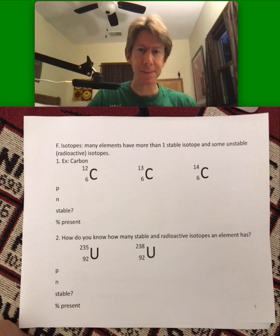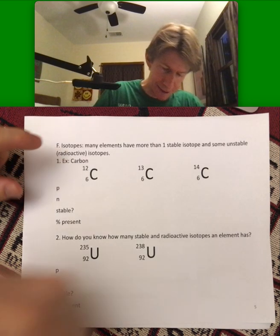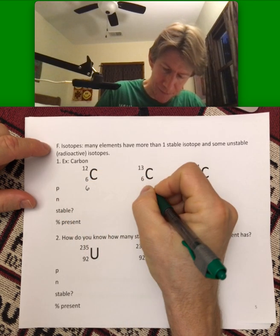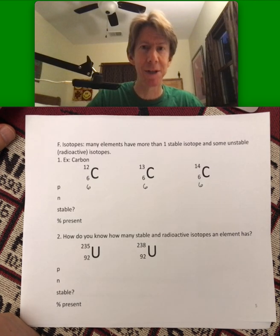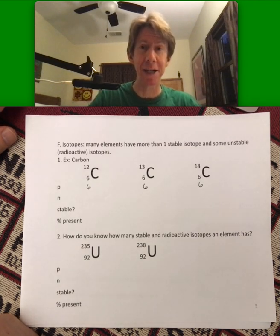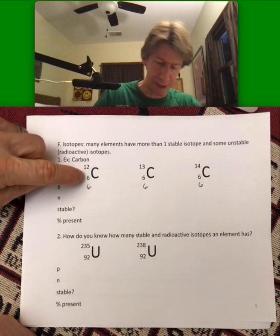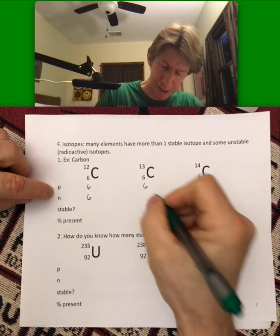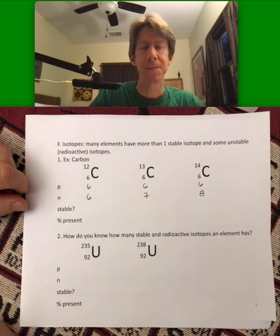So they're all carbon. So they all have six protons. Any carbon atom in the universe is defined by the fact that it has six protons. Now here, if we look at the difference, we have six neutrons, seven neutrons, and eight neutrons. And that's always just subtraction.